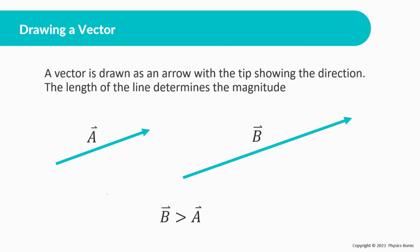A vector is drawn as an arrow with a tip showing the direction. The length of the line determines the magnitude. So like I said, B is greater than A, only because B is longer, the vector that is drawn is longer than A.